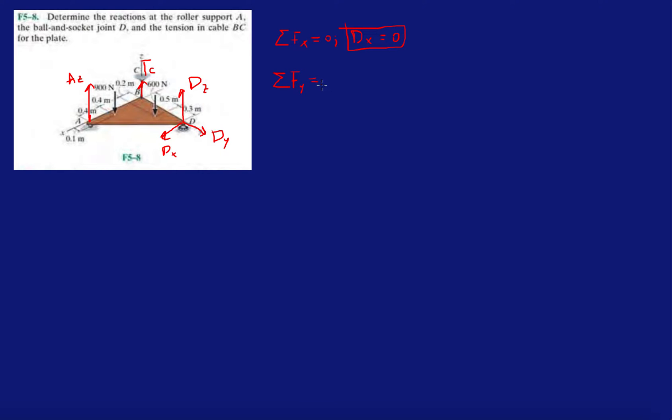Now let's do it in the Y direction. We have DY and nothing else acting in the Y direction. So again, DY will be zero. If we look at all the forces going in the Y direction, there's only DY in that direction.